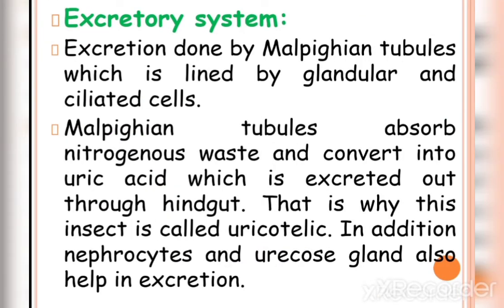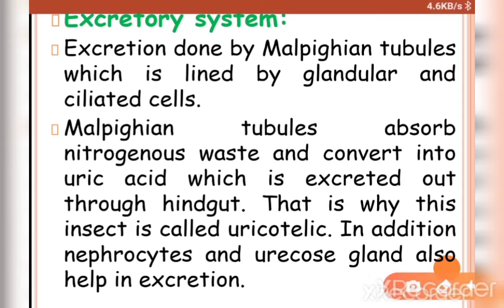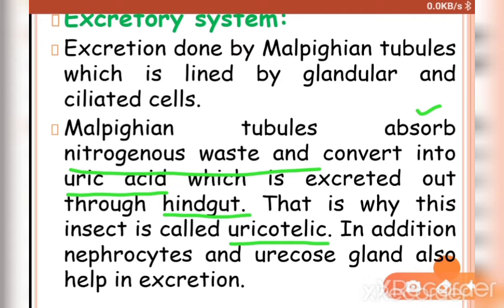Excretion is carried out by Malpighian tubules, which are lined by glandular and ciliated cells. The Malpighian tubules absorb nitrogenous waste and convert it into uric acid, which is excreted out through the hindgut. This is why the cockroach is called uricotelic. In addition, nephrocytes and uricose glands also help in excretion.